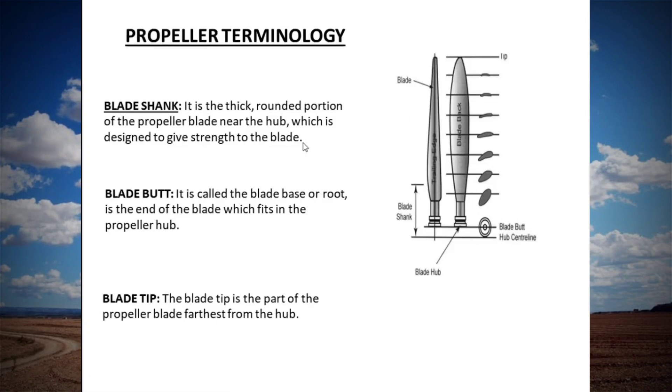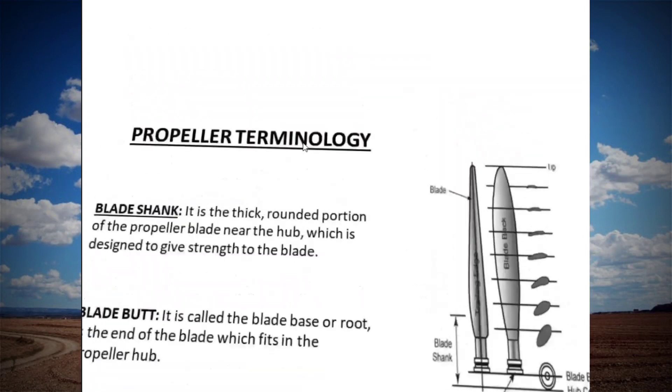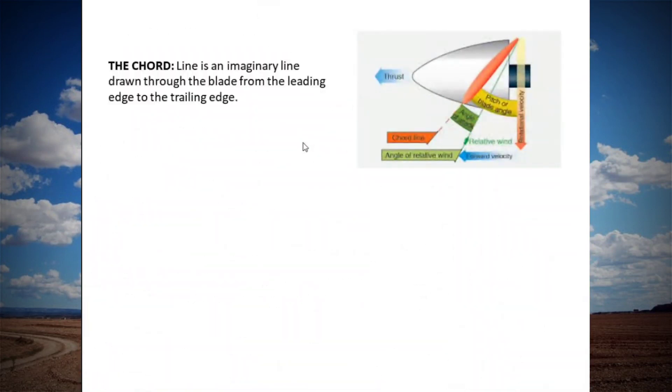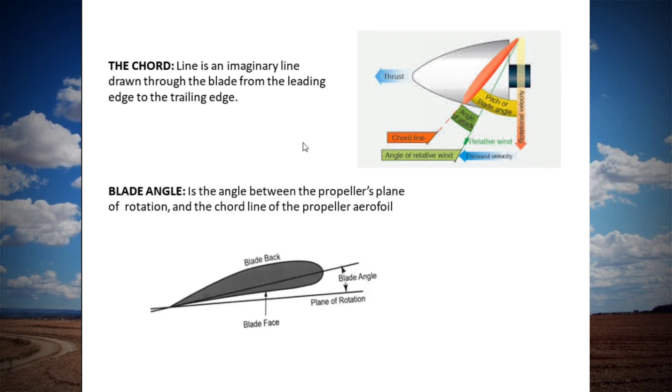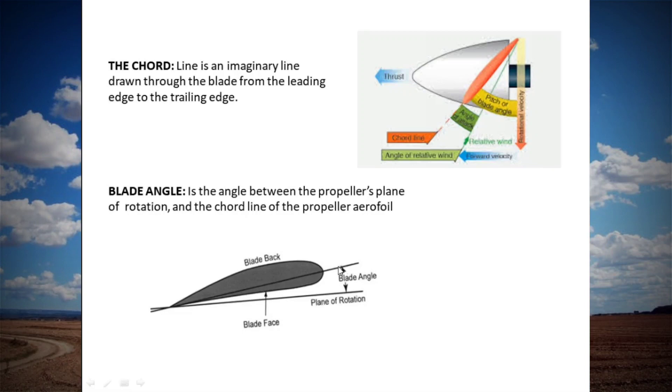Let's discuss some more features like chord line. It is an imaginary line which connects leading edge to the trailing edge of propeller cross section. The blade angle: the blade angle is the angle between plane of rotation and the chord line. So on increasing the blade angle, always speed decreases and vice versa. The blade angle is also somewhere referred as pitch angle.